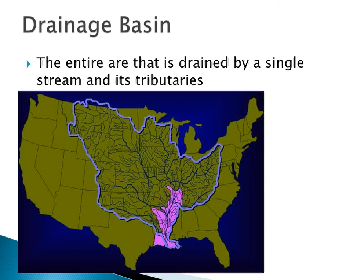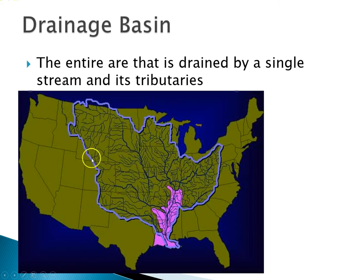The edges of the drainage basin are denoted by a topographically high part known as a divide. A divide actually divides different drainage basins. So if water falls on the east side of this divide, the water ends up flowing east. And if it falls on the west side of this divide, it ends up meeting up with rivers to the west.